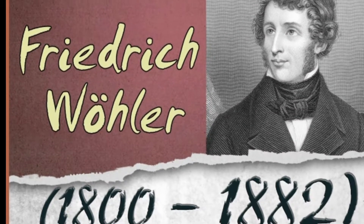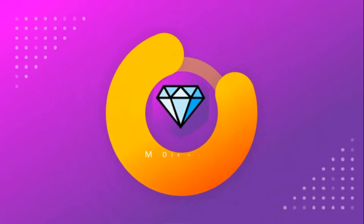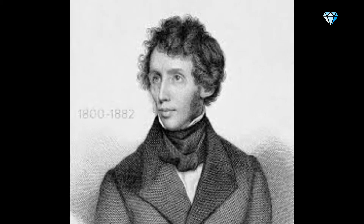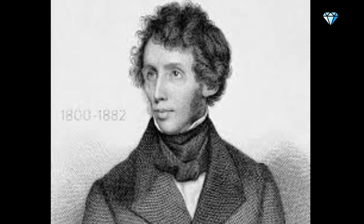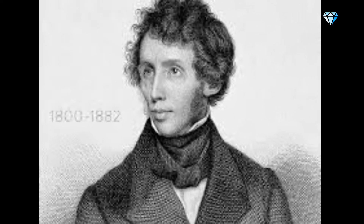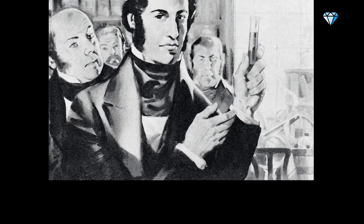Friedrich Wohler, 1800–1882. In 1828, something quite remarkable occurred. A German scientist called Friedrich Wohler discovered that chemicals produced by life itself could be recreated artificially in a laboratory. He did it while trying to concoct ammonia cyanate, but quite by accident he managed to synthesize something else completely.